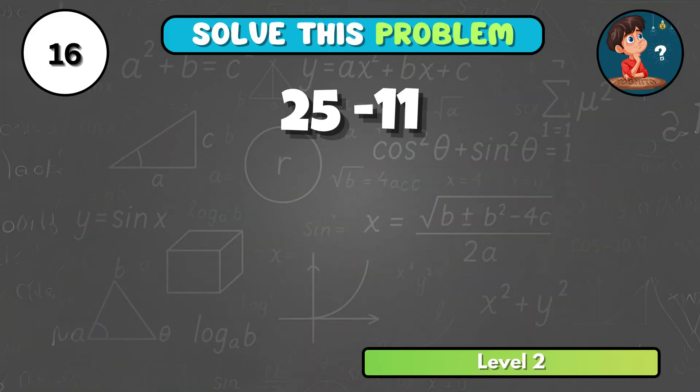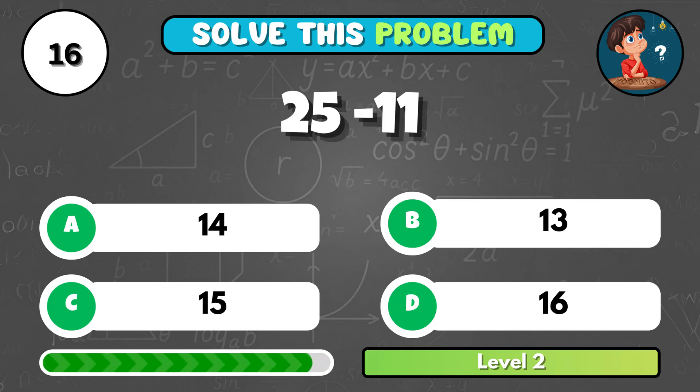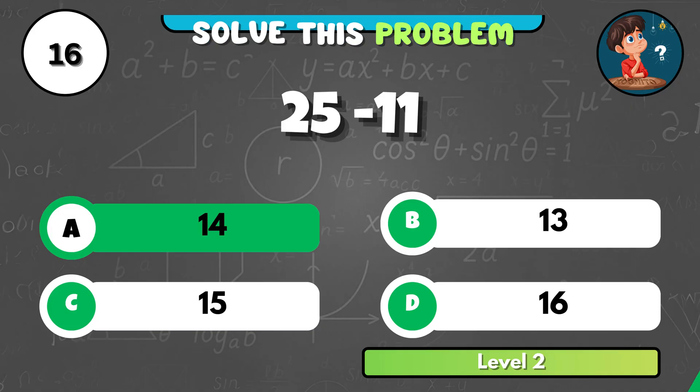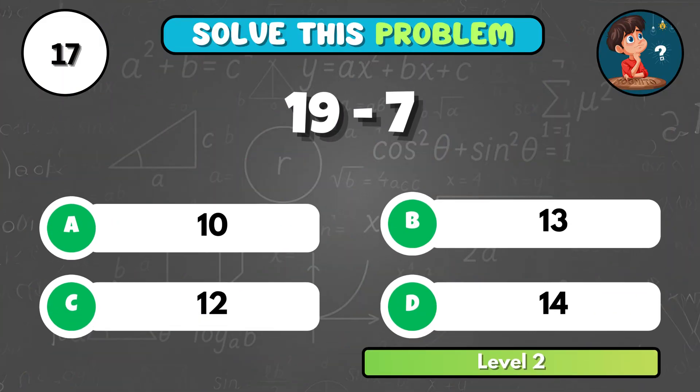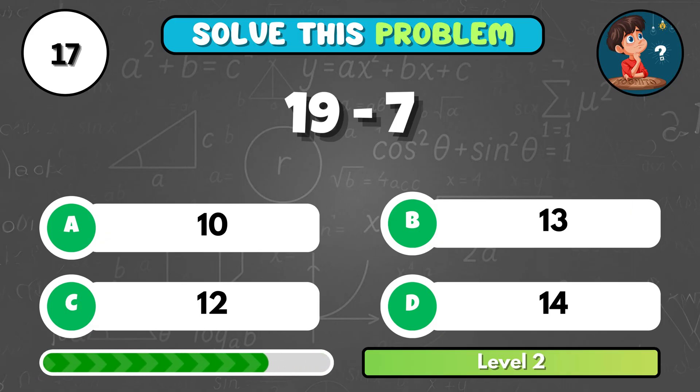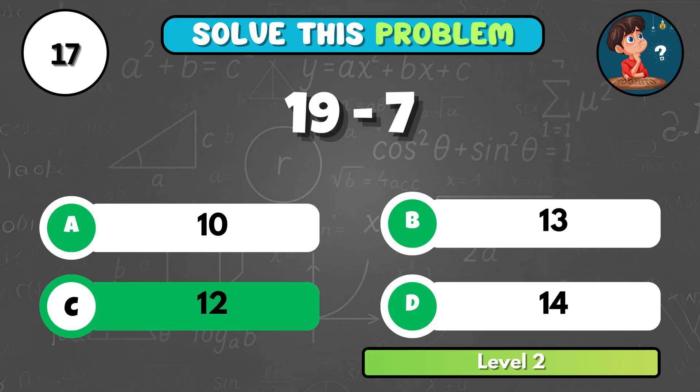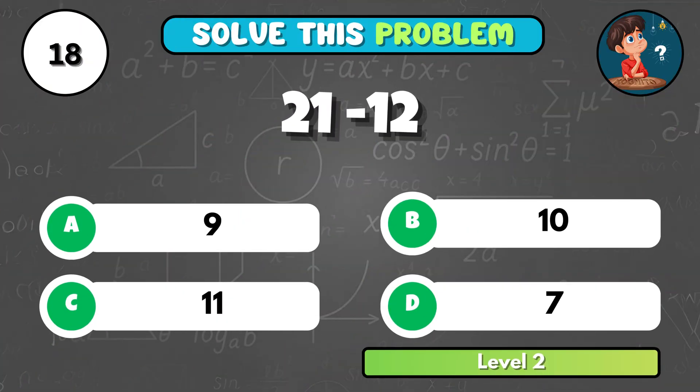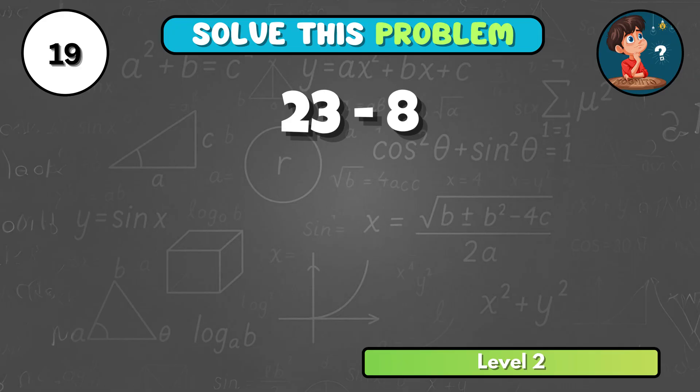What is 25 minus 11? It comes to A, 14! Time to solve 19 minus 7! What's the answer? That's C, 12! Can you figure out 21 minus 12? It's A, 9!